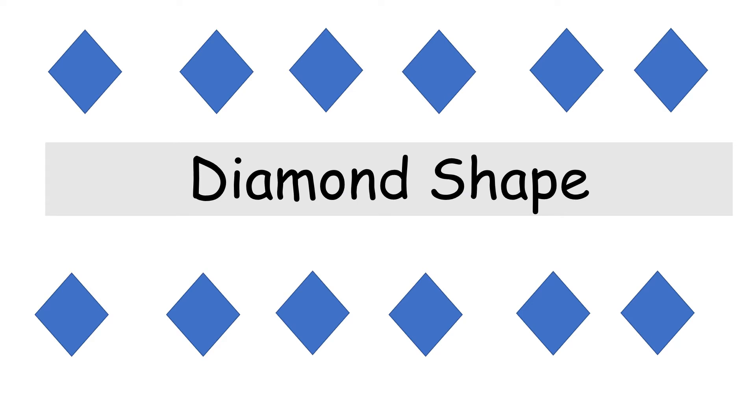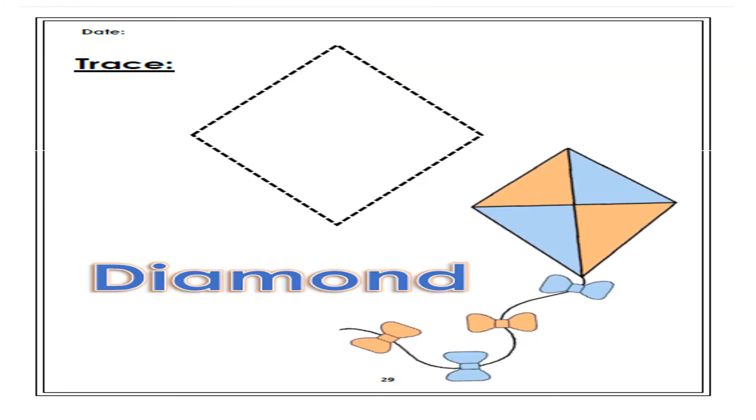Diamond, diamond shape. Okay, let's see. Let's open page 29. The diamond shape. Do you see the beautiful kite? It's in the shape of a diamond.